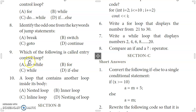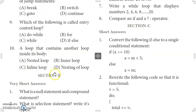9th question: which of the following is called an entry control loop? As mentioned, the for loop and while loop are entry control loops, so both option B and C are correct. 10th question: a loop that contains another loop inside its body is called a nested loop, so option A is the answer.